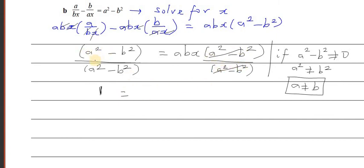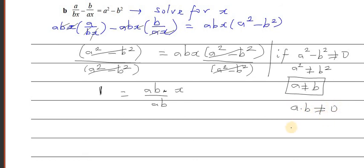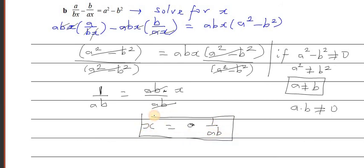So 1 equals abx. Now divide both sides by ab — with the condition that ab must not equal zero. After cancellation, x = 1/(ab). That is your final answer.